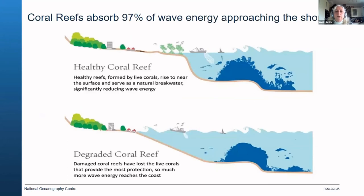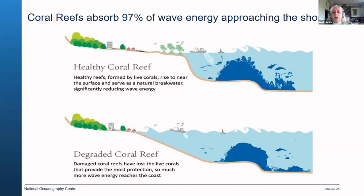Coral reefs can absorb 97 percent of wave energy approaching the shore. If you have a healthy coral reef near the surface of the sea, it can serve as a natural breakwater which reduces wave energy. If it's a resilient reef, it can withstand mechanical damage and protect the shore behind it. But coral reefs are struggling due to sea level rise, sea surface temperature increase, and ocean acidification — all of which are taking away that benefit they provide to the coastline.